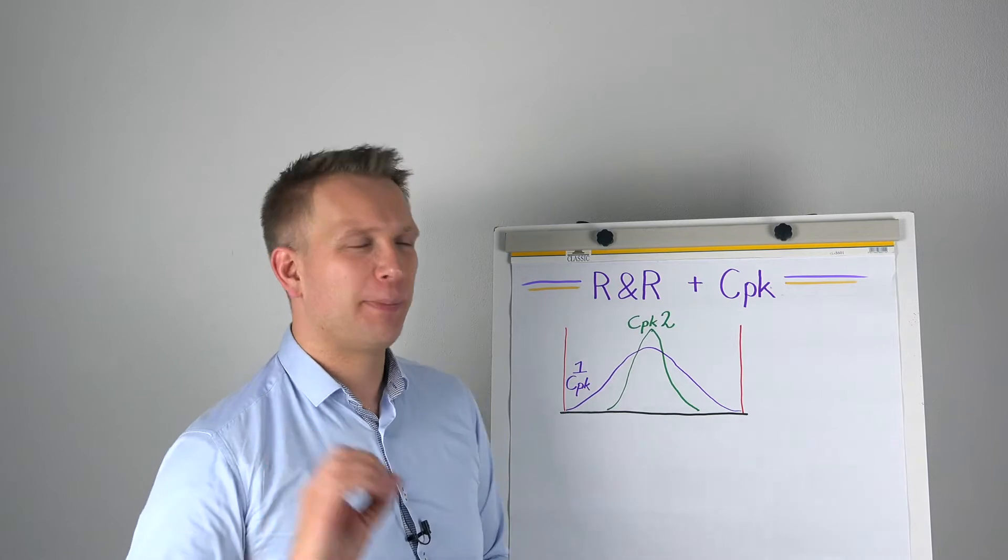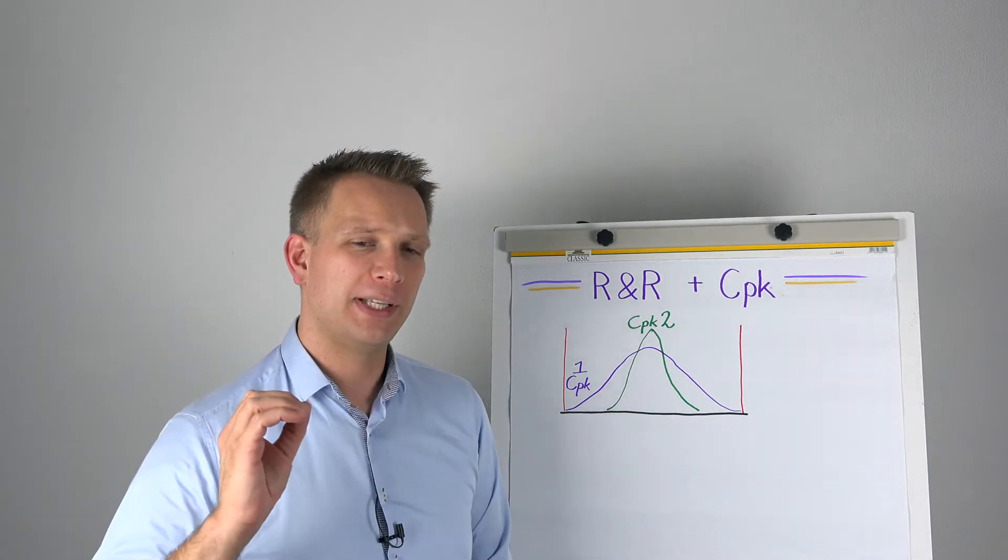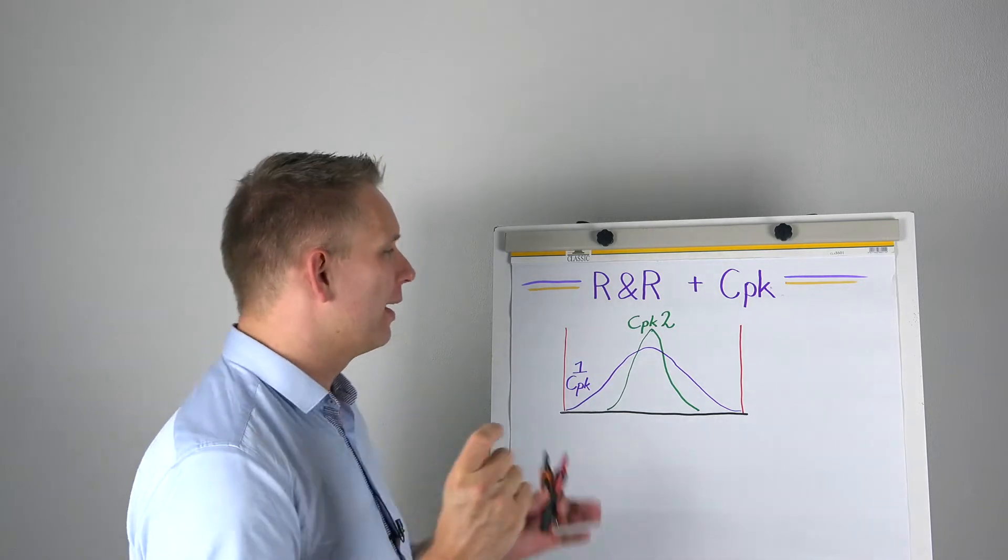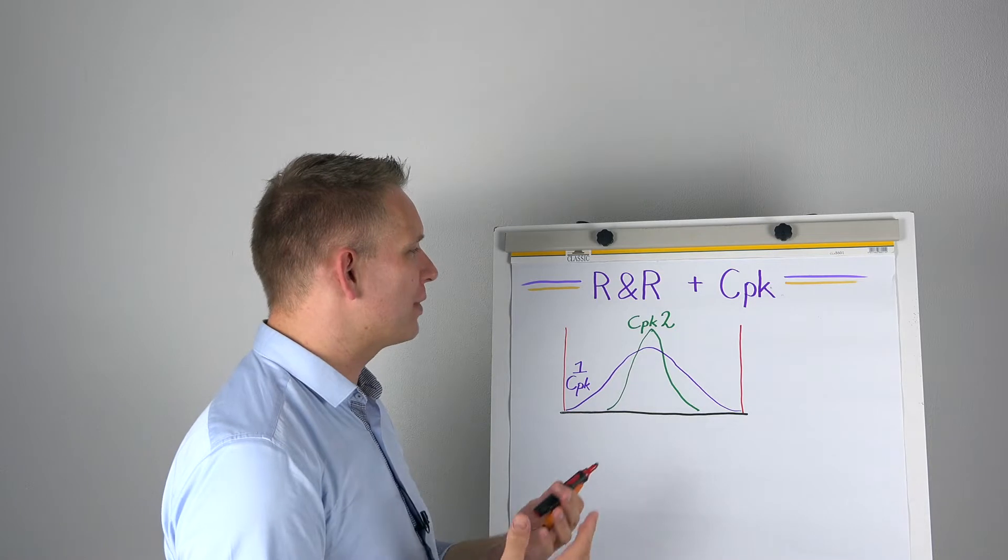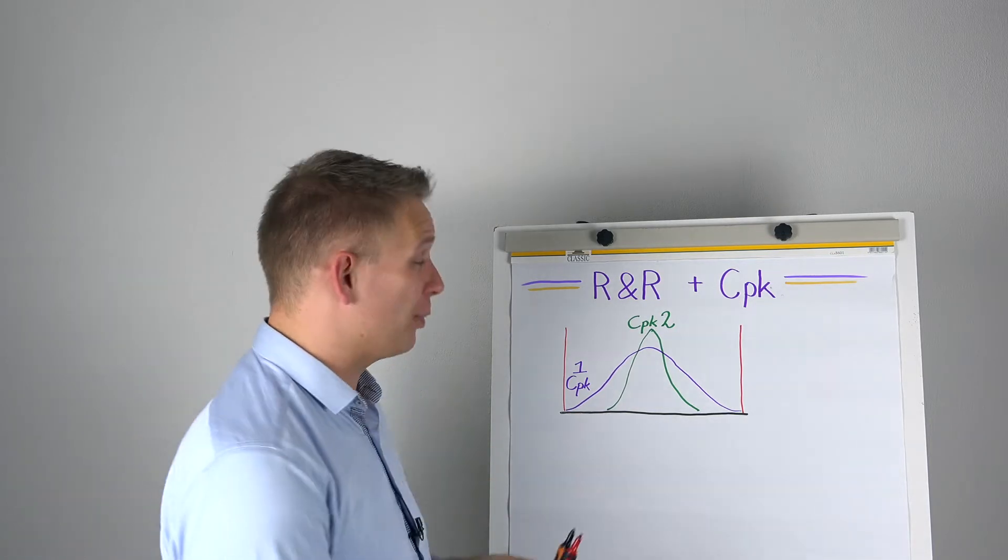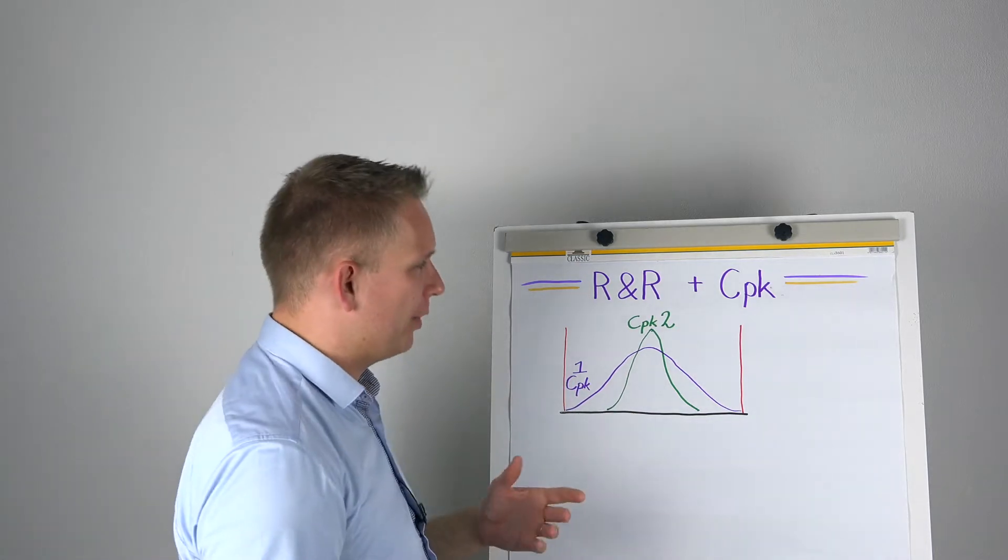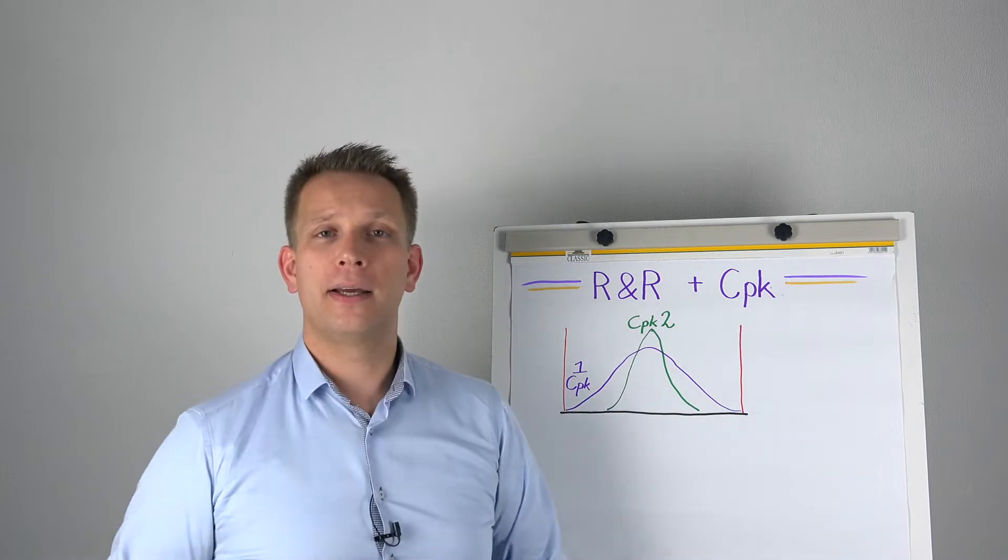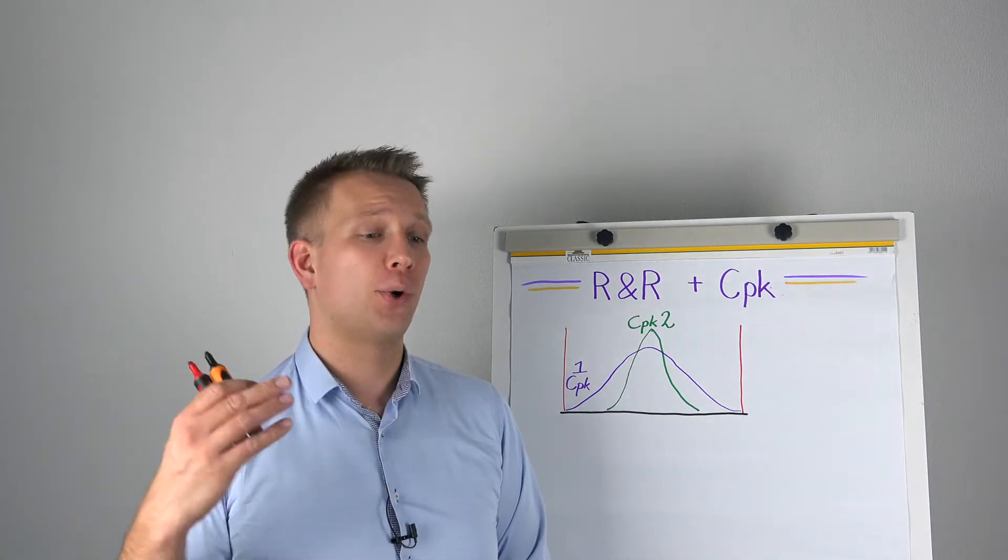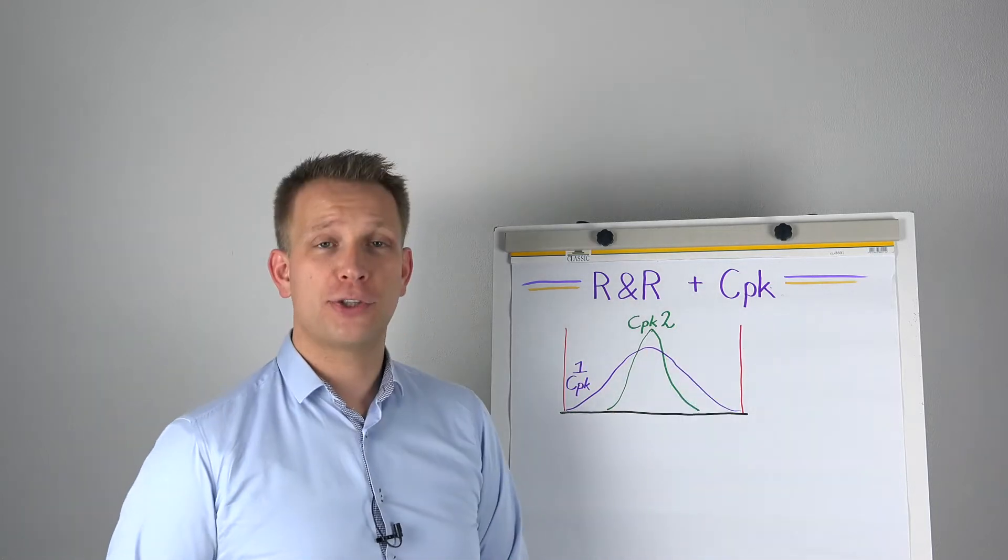And then first, let's check a bit what is the CPK and get the R&R on there. Because I feel that this topic isn't understood well enough when we talk with people about Six Sigma and what the CPK thing actually does. Now, in general, we have this measure, and I'm not even going to put values here, but there is a lower and an upper specification limit.